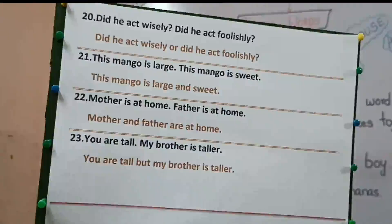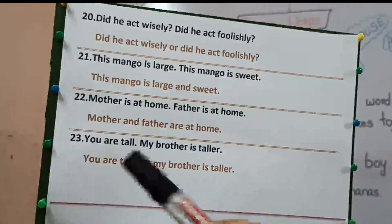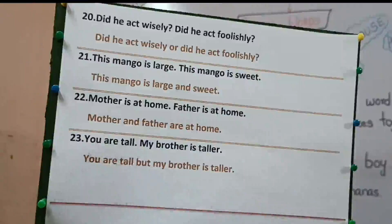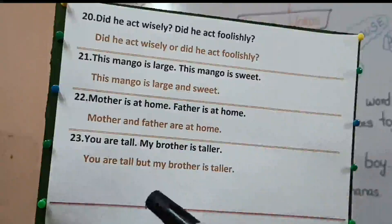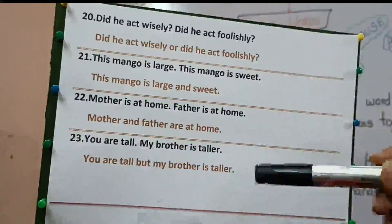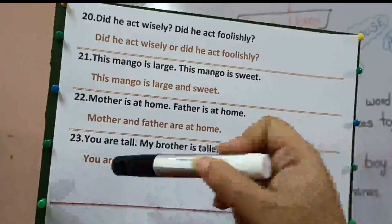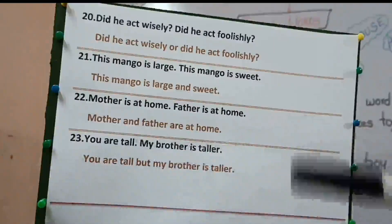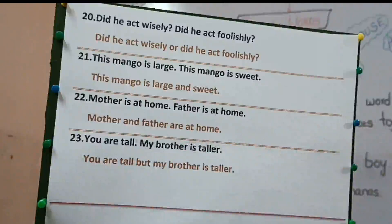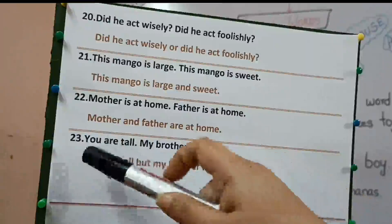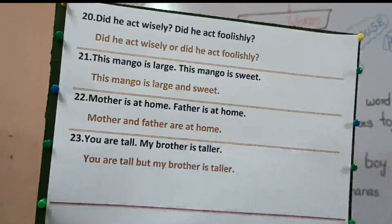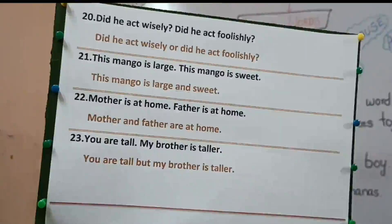Twenty-third and the last part of exercise three: you are tall. My brother is taller. You are tall but my brother is taller. Why we have used 'but'? Because there is a contrast between these two sentences — you are tall, but your brother is taller than you. So here we have used 'but' as a conjunction. So it is all done with all the three exercises.